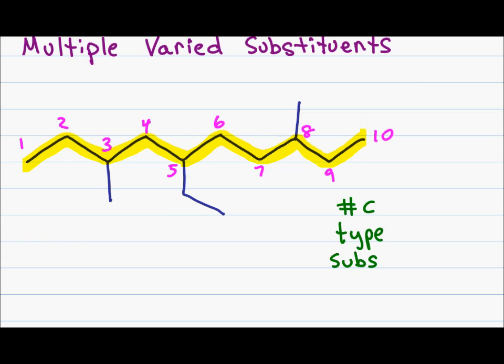I have ten carbons in my parent chain giving me a first name of dec, and only single bonds giving me ane. For the substituents: I have two methyl substituents, one on carbon three and one on carbon eight, so this will be 3,8-dimethyl.